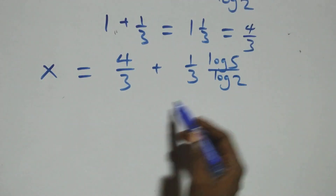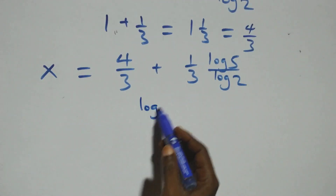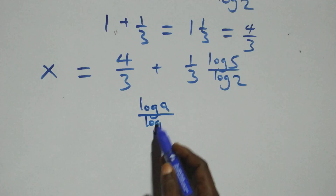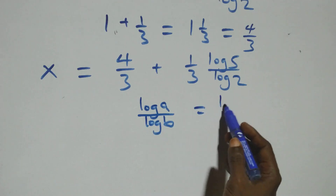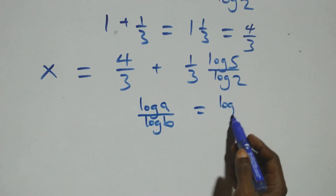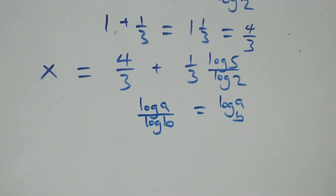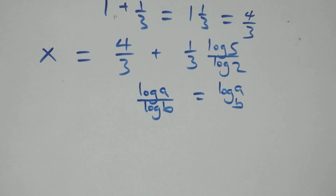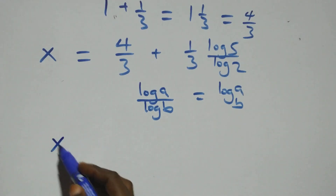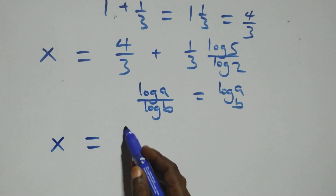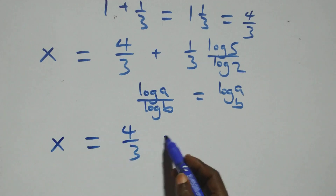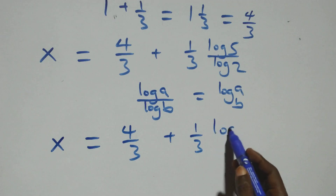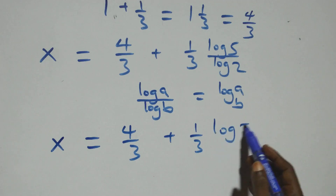We apply the change of base rule: log A over log B is the same as log A to base B. So what we have becomes X equals to 1 plus one-third plus one-third times log base 2 of 5, which simplifies to 4 over 3 plus one-third log base 2 of 5.